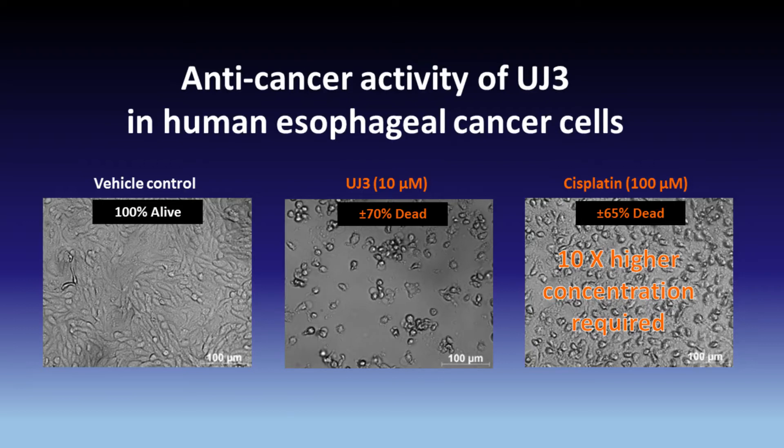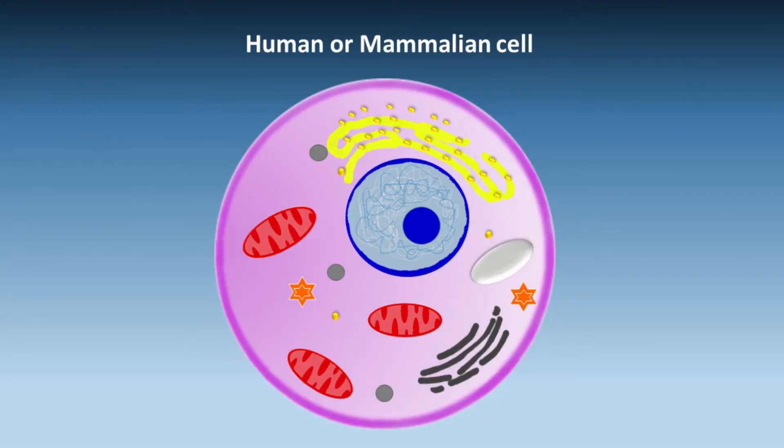This will also be seen in the fluorescent images in the sections that follow. To see what happens when UJ3 kills a cancer cell, we need to look a bit closer at the structures inside human cells, both healthy and cancerous ones.